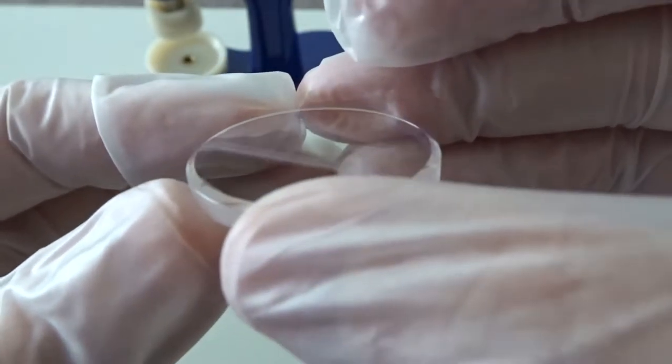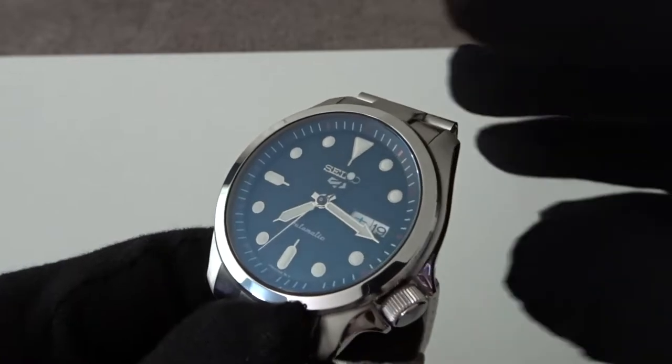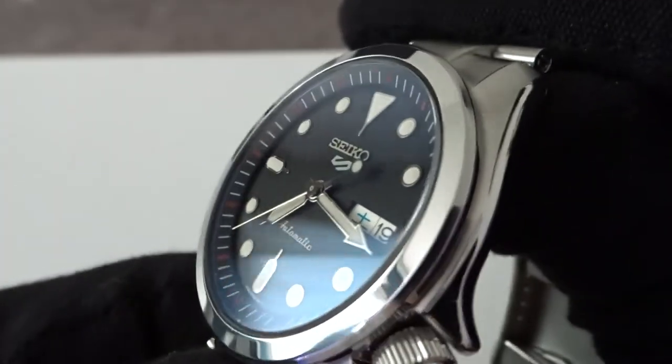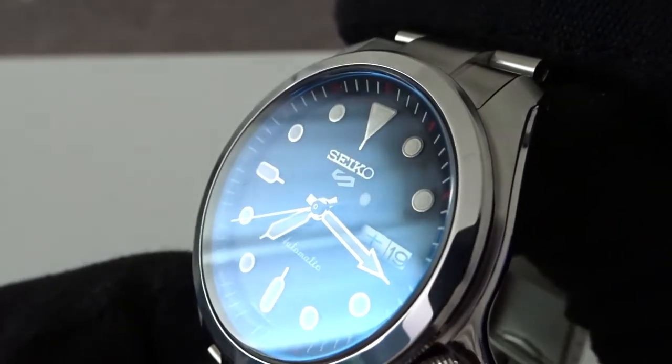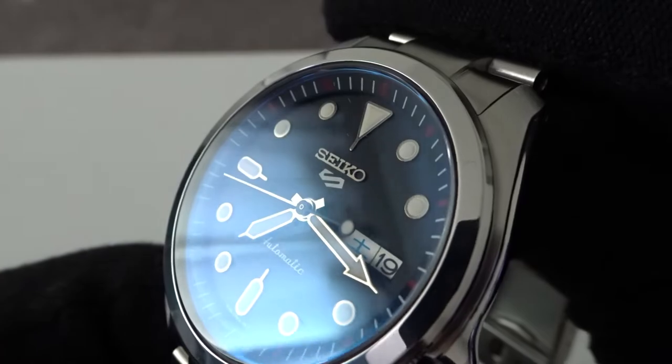Another decision you need to make when buying a replacement sapphire crystal is what anti-reflective coating you want it to have. Getting it with a blue AR coating is common, but I've seen options for green, purple, red, and clear AR before. The color of the coating does matter in the sense that if you look at the watch in certain lighting angles you will be able to see the color, but usually when looking at the crystal head on you won't notice it.